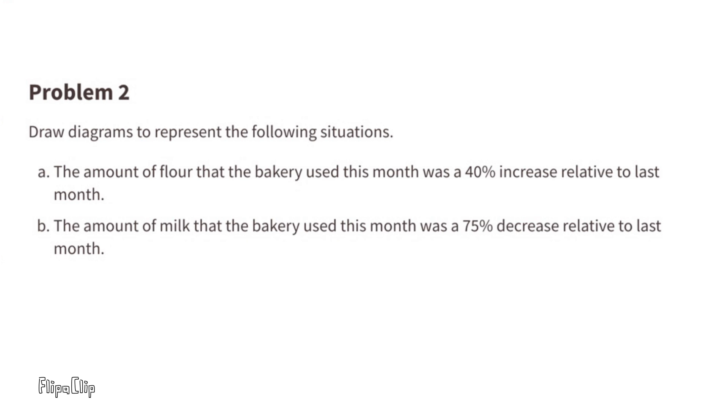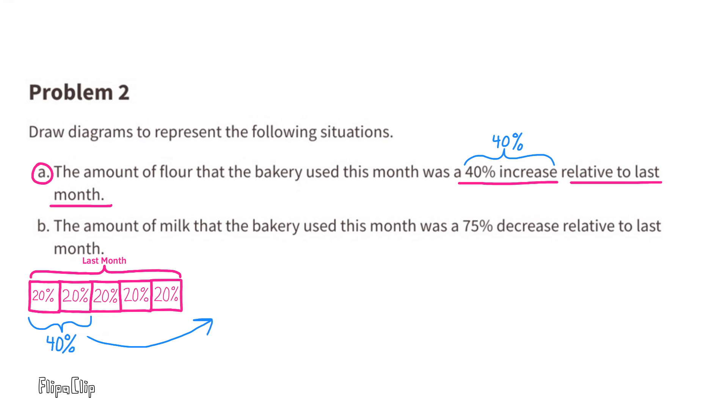Number 2. Draw diagrams to represent the following situations. A. The amount of flour that the bakery used this month was a 40% increase relative to last month. This diagram represents the amount of flour used last month. It's divided into 20% sections. Since this month was a 40% increase relative to last month, we can add 40% to last month, making this month's worth 140% compared to last month.